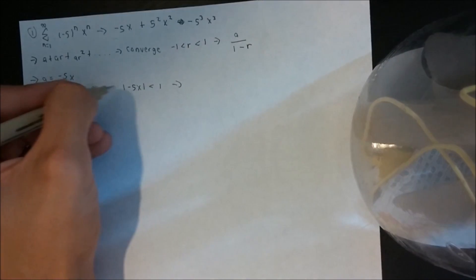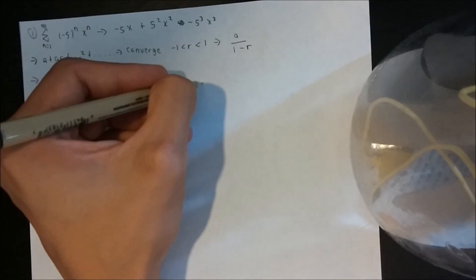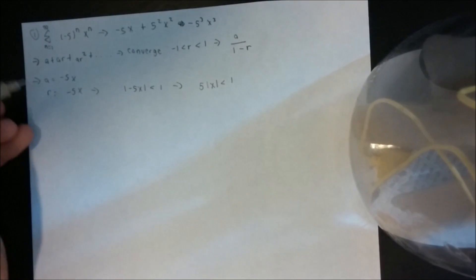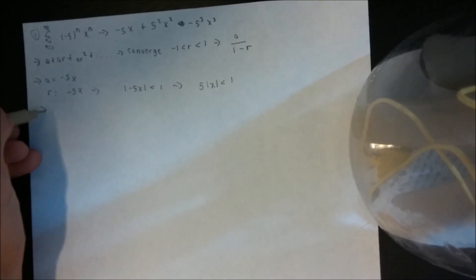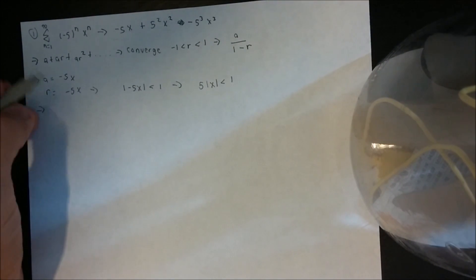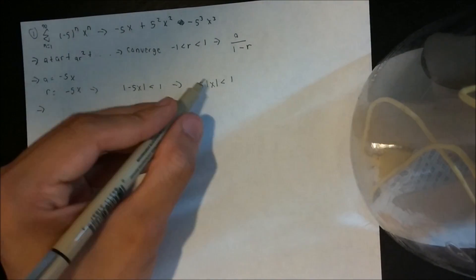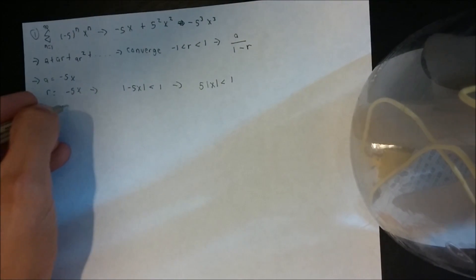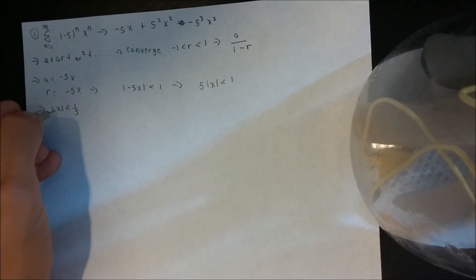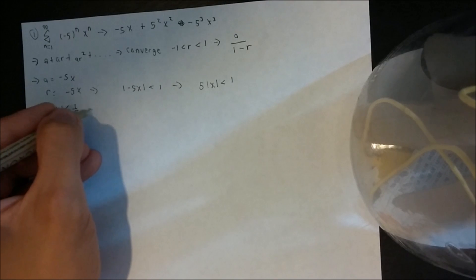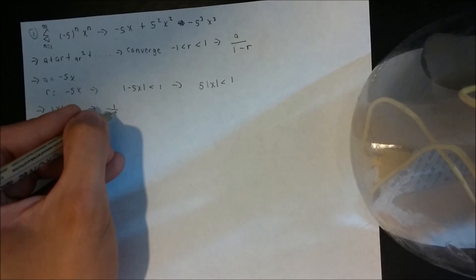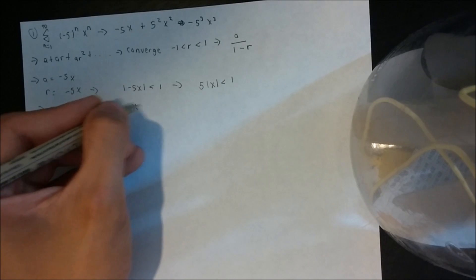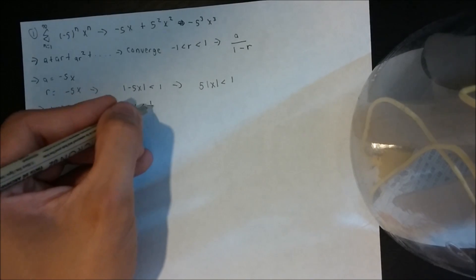We take the 5 out of the absolute value, we get 5 times the absolute value of x is less than 1. We divide by 5, so we get the absolute value of x less than 1/5. To get rid of the absolute value, that gives us negative 1/5 less than x less than 1/5.